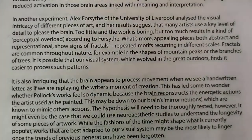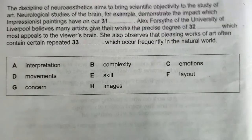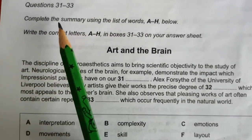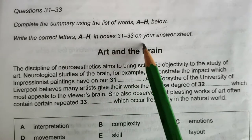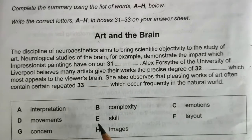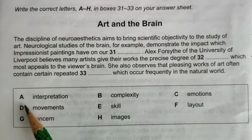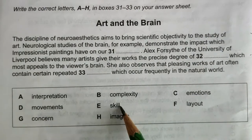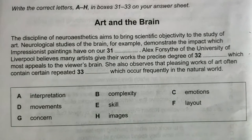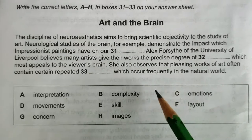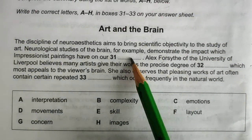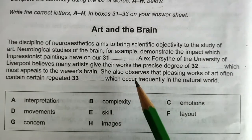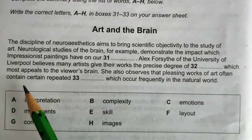Now for questions 31 to 33 — complete the summary using the list of words A to H: interpretation, complexity, emotions, movement, skill, layout, concern, images. A tip: if you are short on time, try to fill the blanks using the help box words alone without re-reading the full paragraph first.